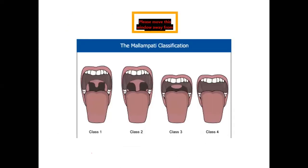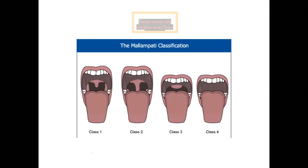A very important airway examination is done through the Mallampati classification, in which the patient is asked to protrude the tongue without phonation, and by using a torch, the different classes can be identified. Class 1 is the class in which it is very easy to perform endotracheal intubation. From class 1 proceeding to class 4, it becomes more and more difficult. Expert anesthesiologists use various equipment to facilitate difficult intubation.